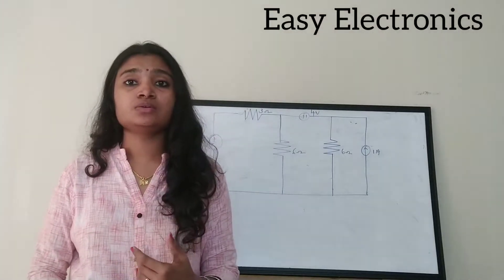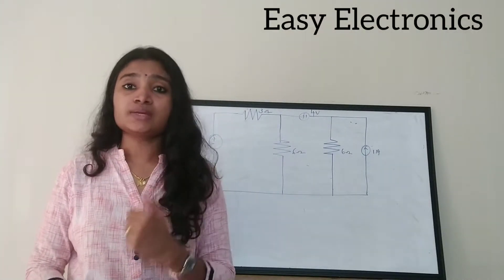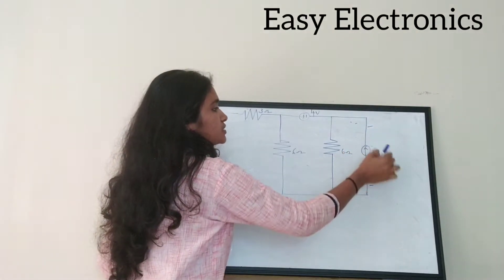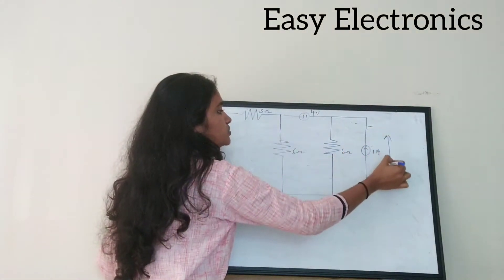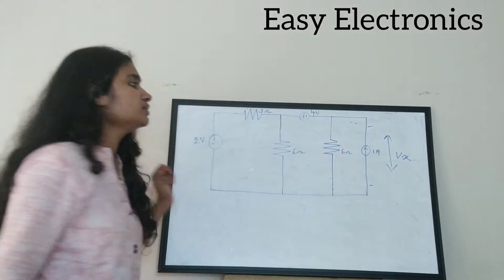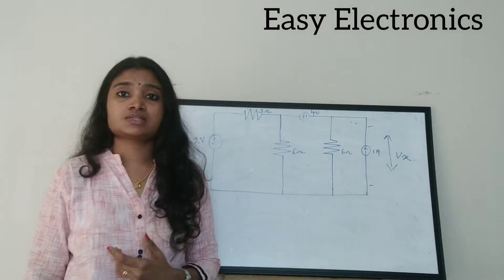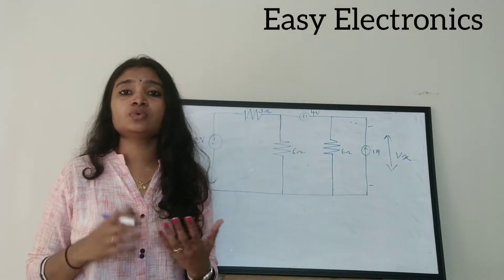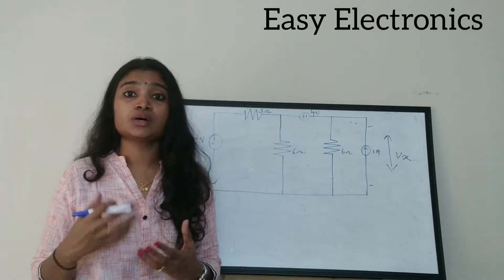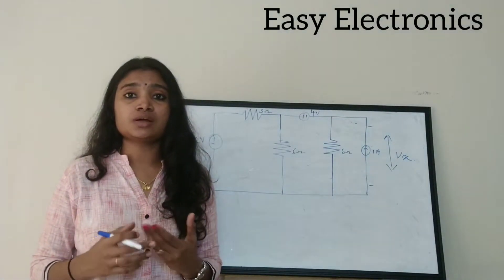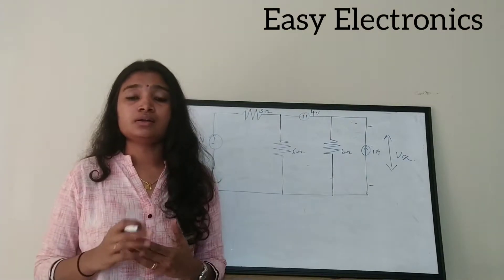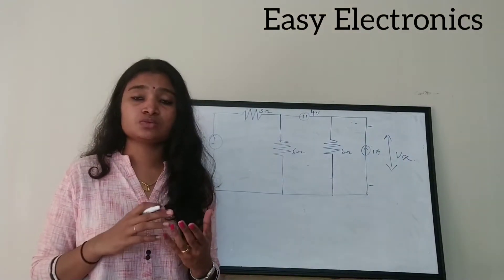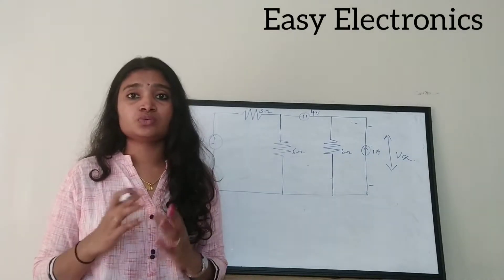Now let us do a question on source transformation. The question is to find the voltage across the current source — let this voltage be Vx. We will solve this using source transformation. The voltage source can be converted to a current source using IS = Vs/R, and the current source can be converted to a voltage source using Vs = IS·R.